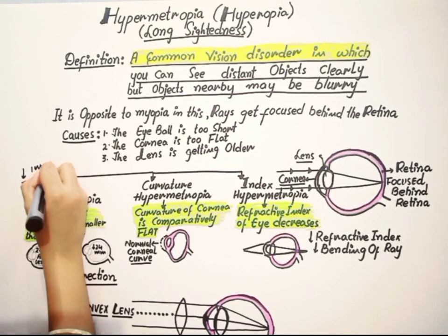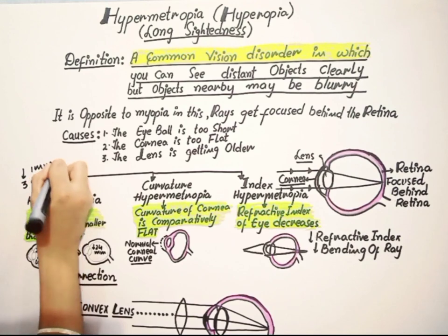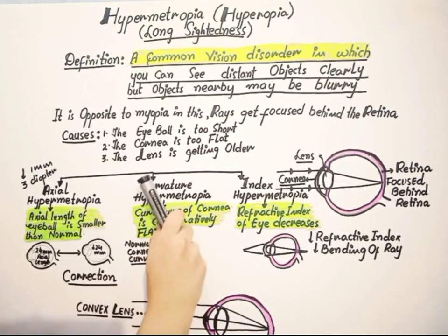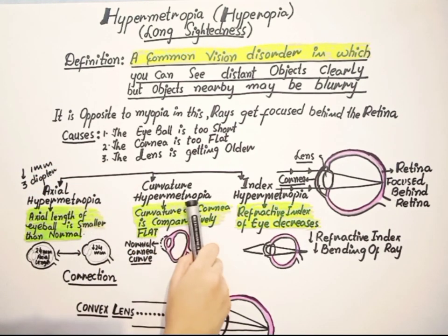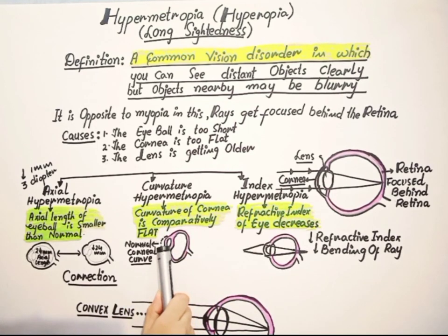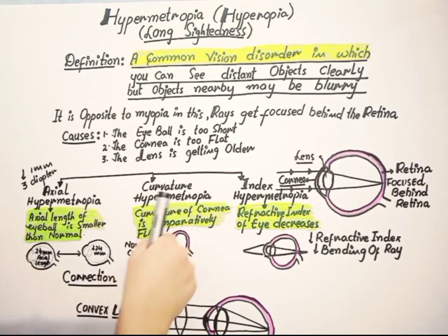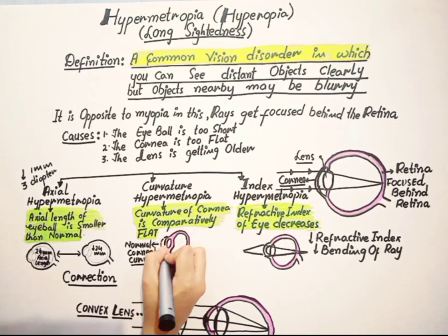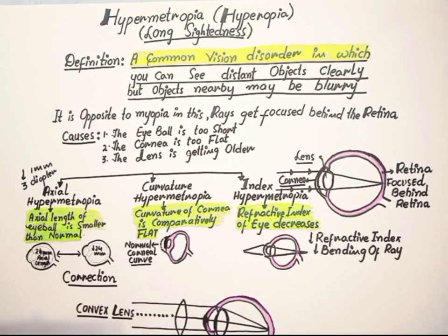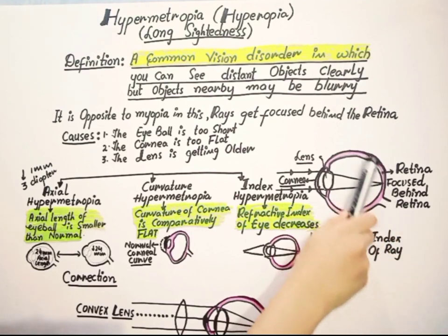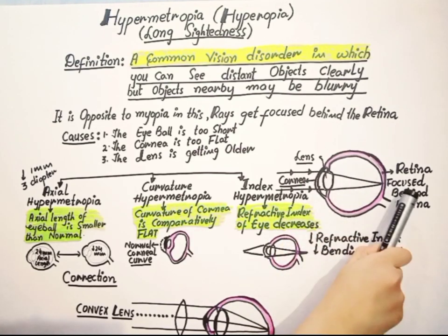The next is curvature, curvature hypermetropia. The cornea of hypermetropia is comparatively flat. In this condition, normally the corneal curve should be like this, but in curvature hypermetropia what happened? This cornea will be flat, so again the image will not focus on the retina wall and it will be focused behind the retina.